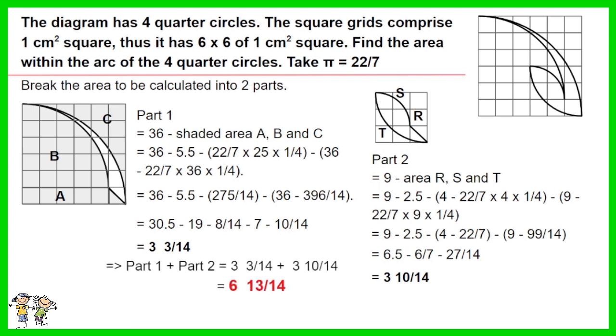Part 1 plus part 2 is 3 and 3 over 14 plus 3 and 10 over 14. The answer is 6 and 13 over 14.